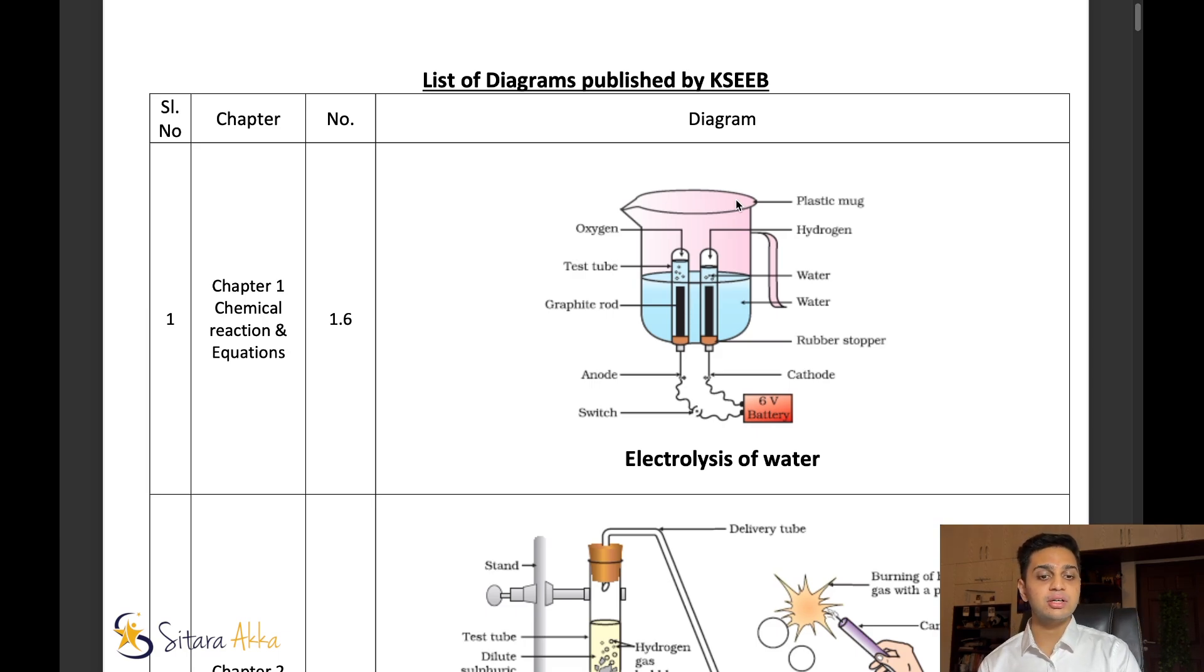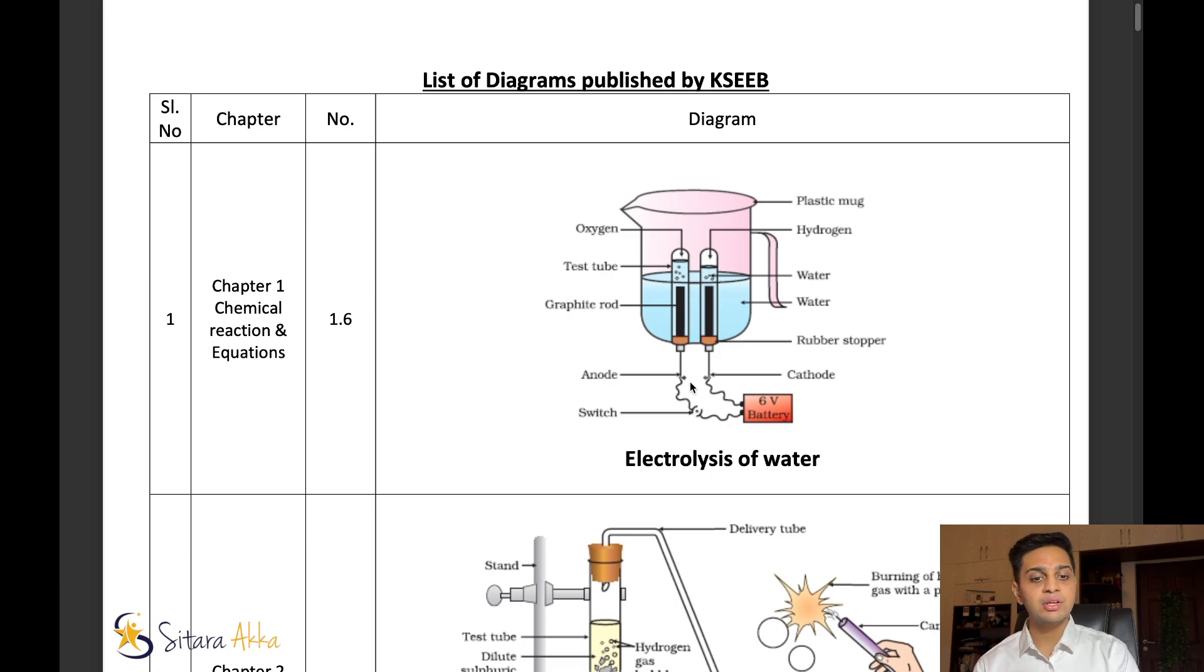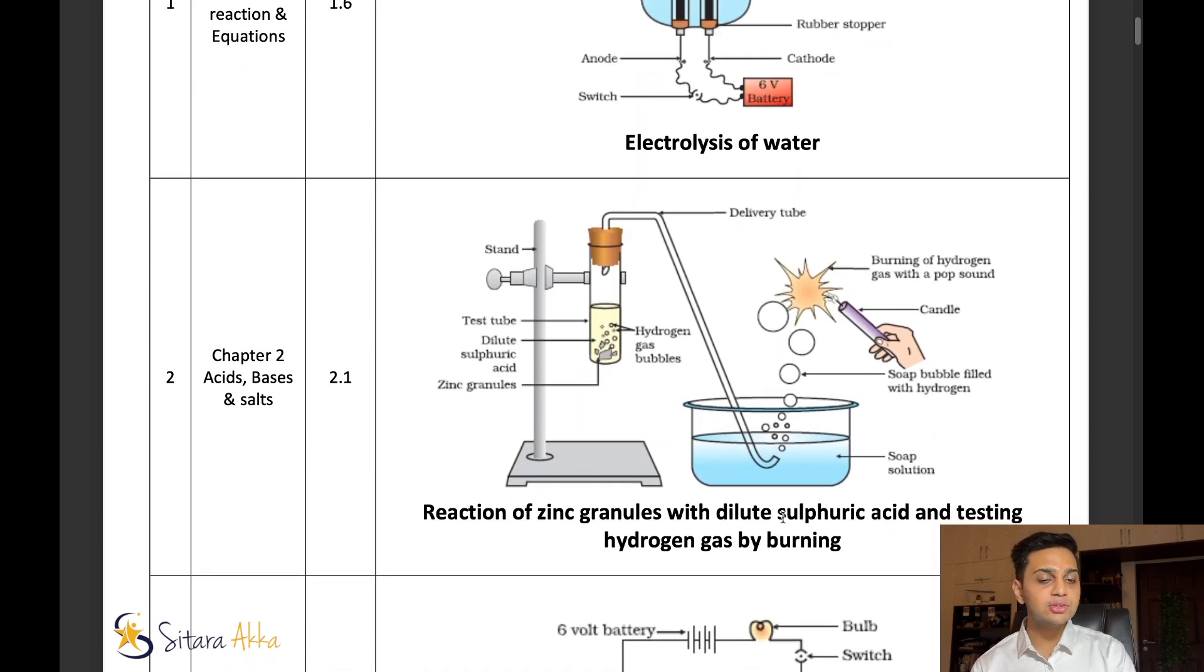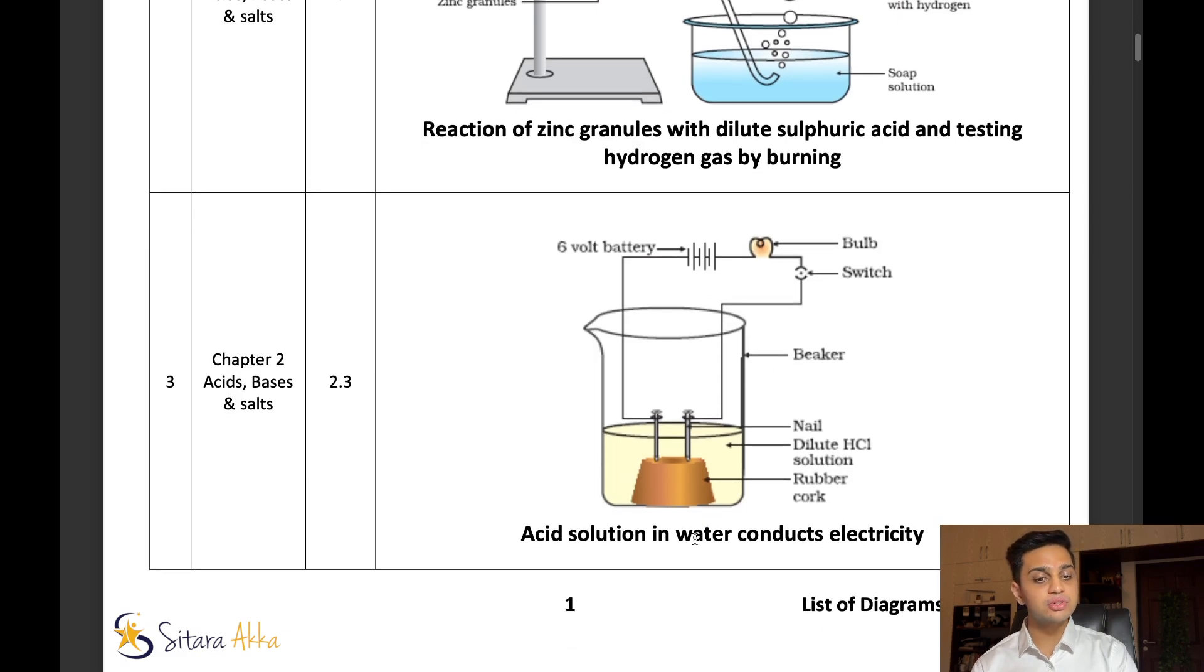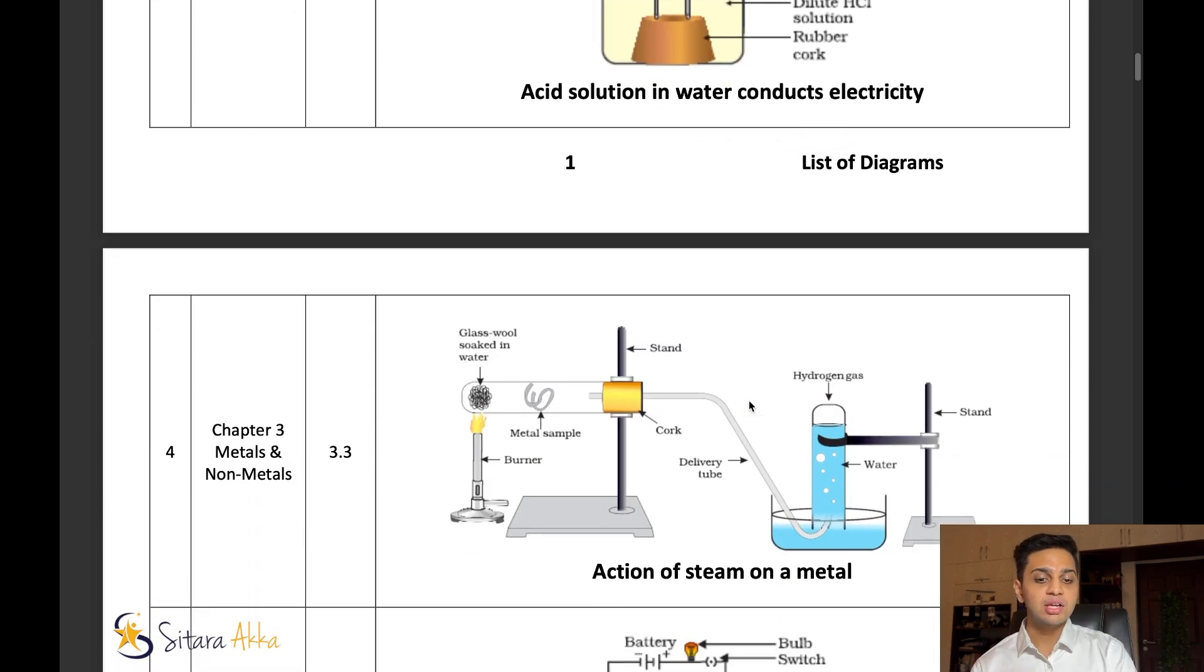The most important diagram is electrolysis of water. Therefore, we will examine this in the exam. In this diagram, the reaction of zinc granules and dilute sulfuric acid, we will examine for four marks. We have to understand that hydrogen gas is being evolved, and we have to test for hydrogen. If we test with the candle, we will hear the pops sound. This also needs to be mentioned in your diagram. Acid solution and water conducts electricity - this diagram shows how much water conducts electricity, but this is not that important.